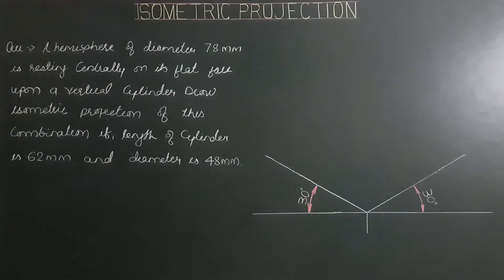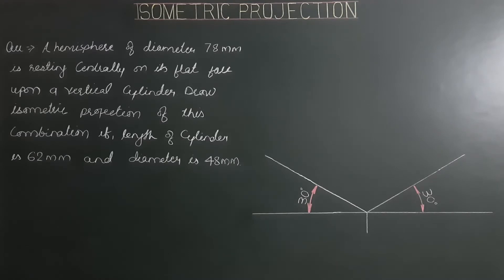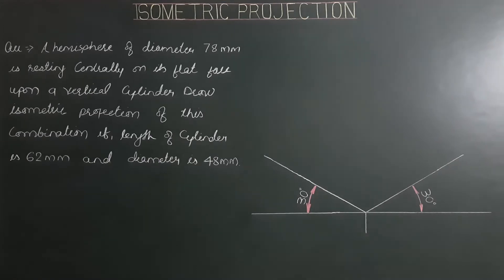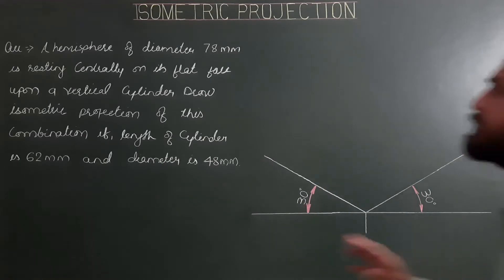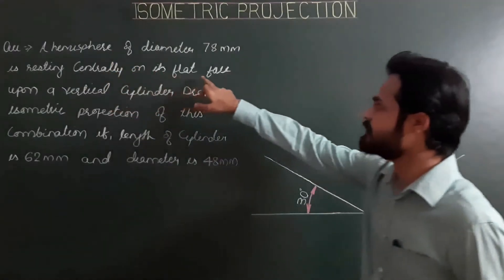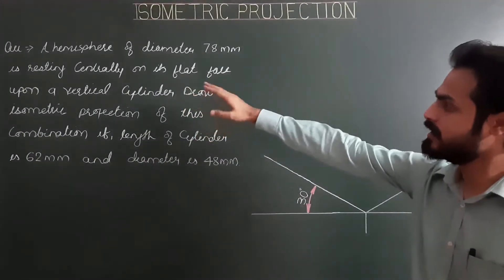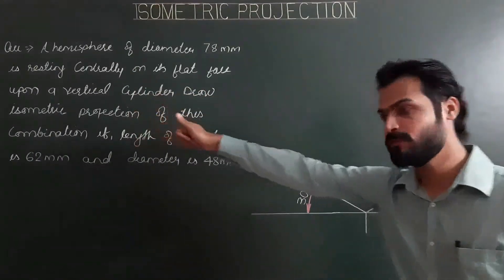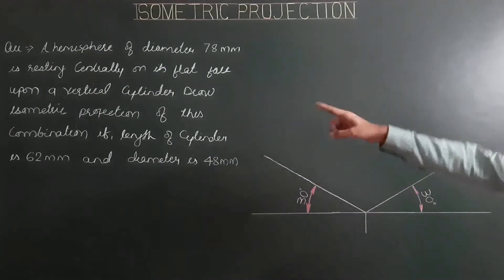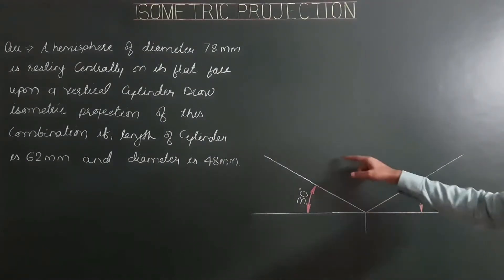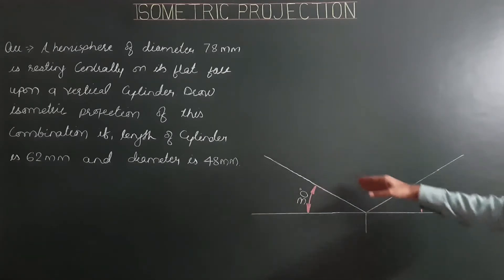A hemisphere of diameter 78 mm is resting centrally on its flat face upon a vertical cylinder. Draw the isometric projection of this combination if the length of cylinder is 62 mm and diameter is 48 mm. The cylinder is vertical, meaning its axis is vertical.